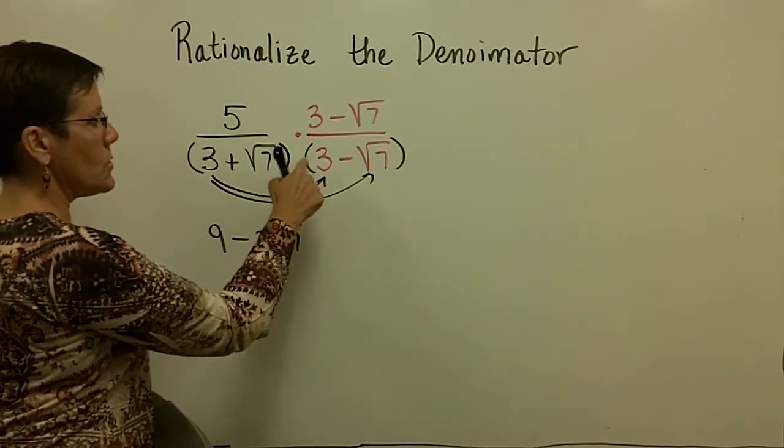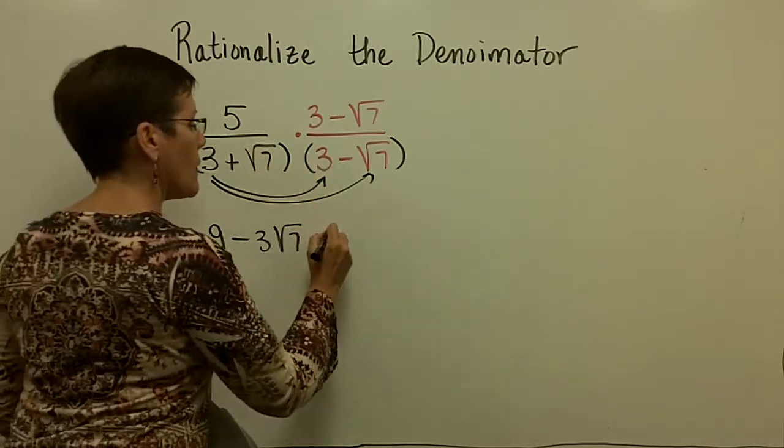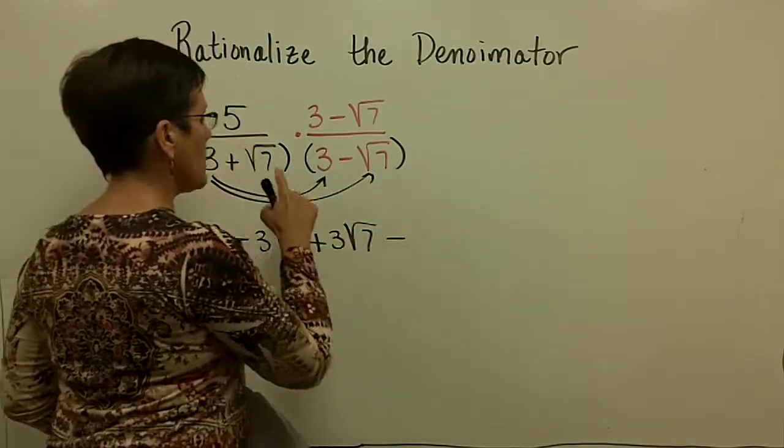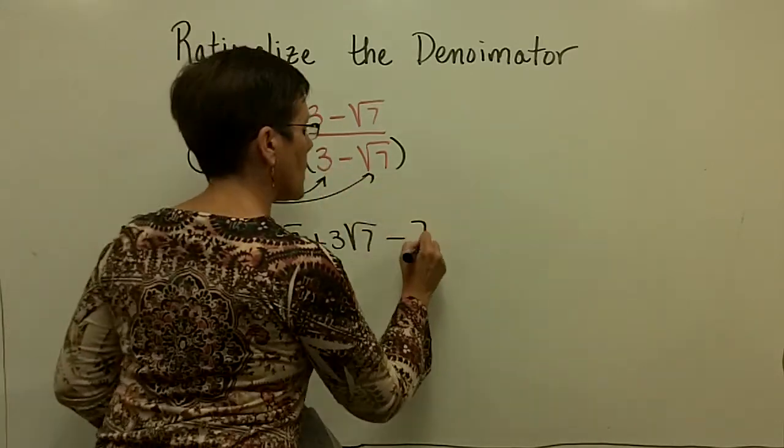Plus sign right here, these two are going to be multiplied together, and 3 times the square root of 7 is 3 times the square root of 7. Finally, this plus times this minus is a minus, and the square root of 7 times the square root of 7 is 7.